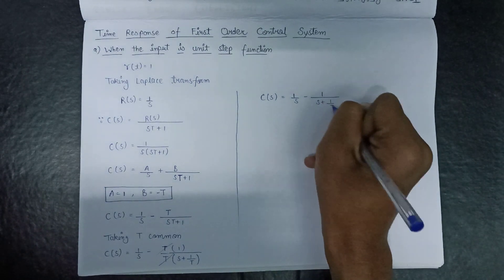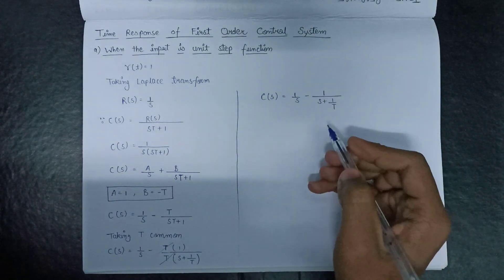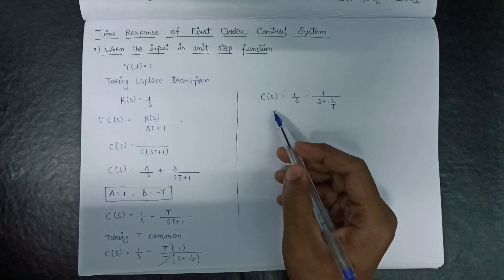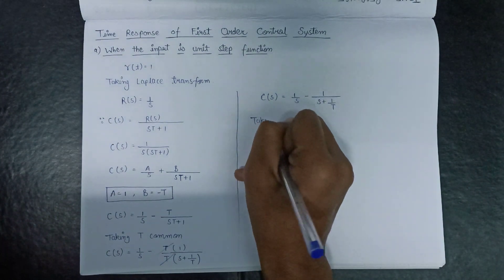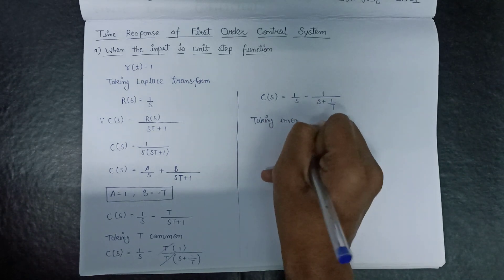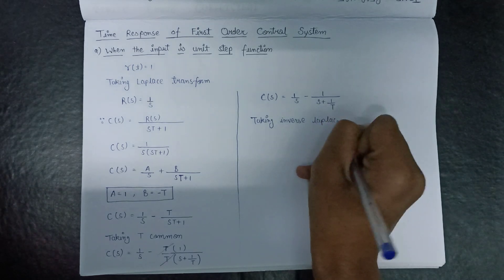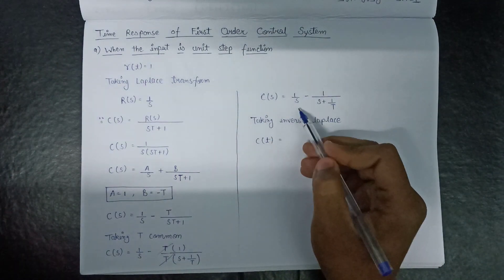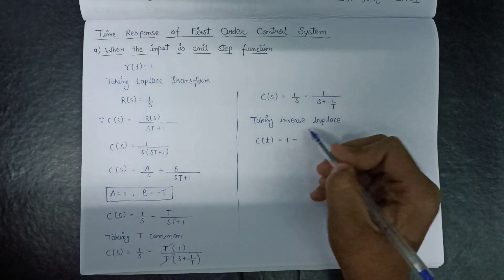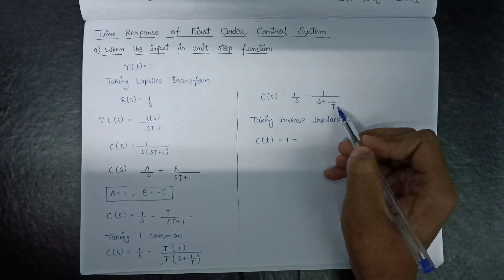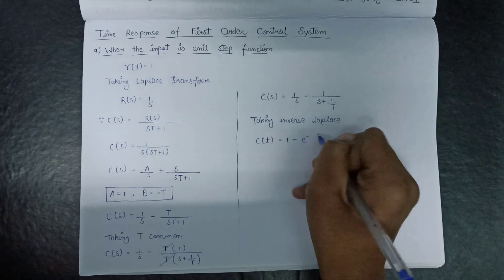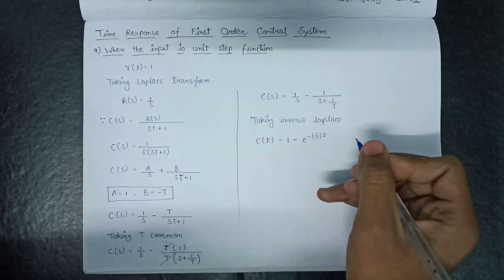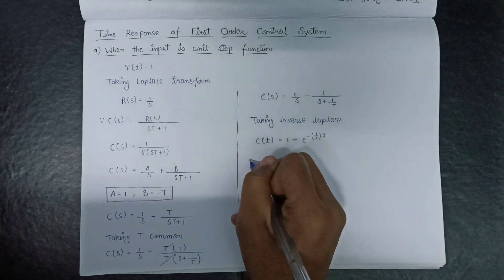This is our expression for C(s). Now we find c(t) by taking the inverse Laplace transform. The inverse Laplace transform of 1/s equals 1, and the inverse Laplace transform of 1/(s + a) equals e^(−at). So c(t) equals 1 minus e^(−t/T).